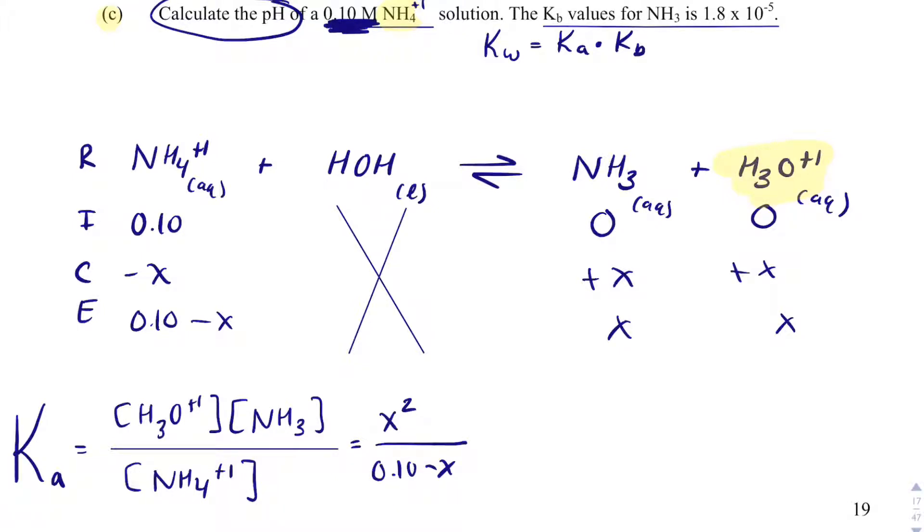And so what I can say is, well, K-W, according to my formula sheet, is 1 times 10 to the minus 14. We need K-A to end up solving this. And so the K-B that they give us is 1.8 times 10 to the minus 5. And now that I have K-A, if I plug that into my calculator, I get 5.56 times 10 to the minus 10.